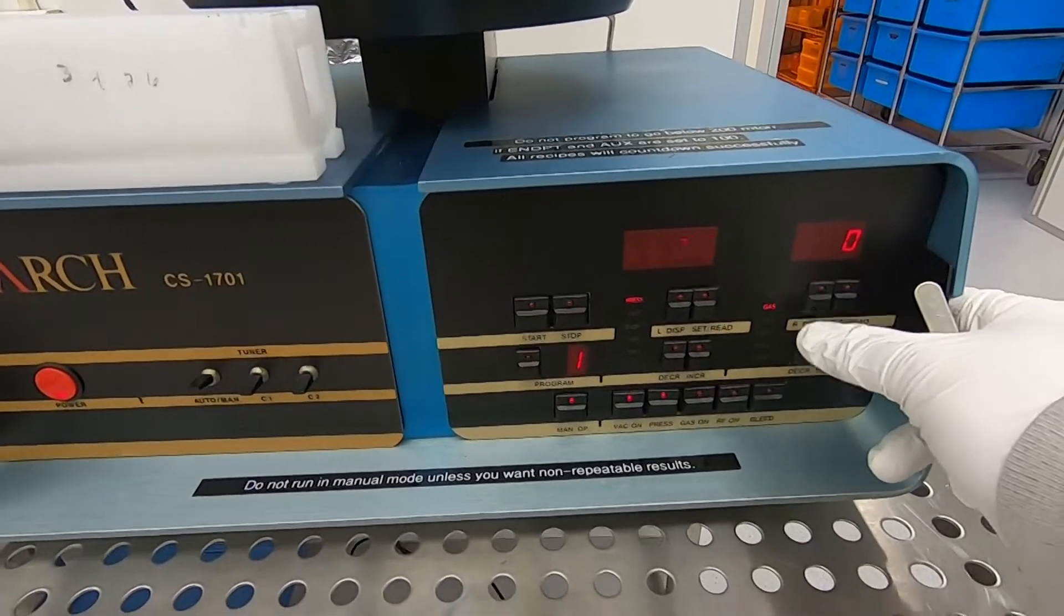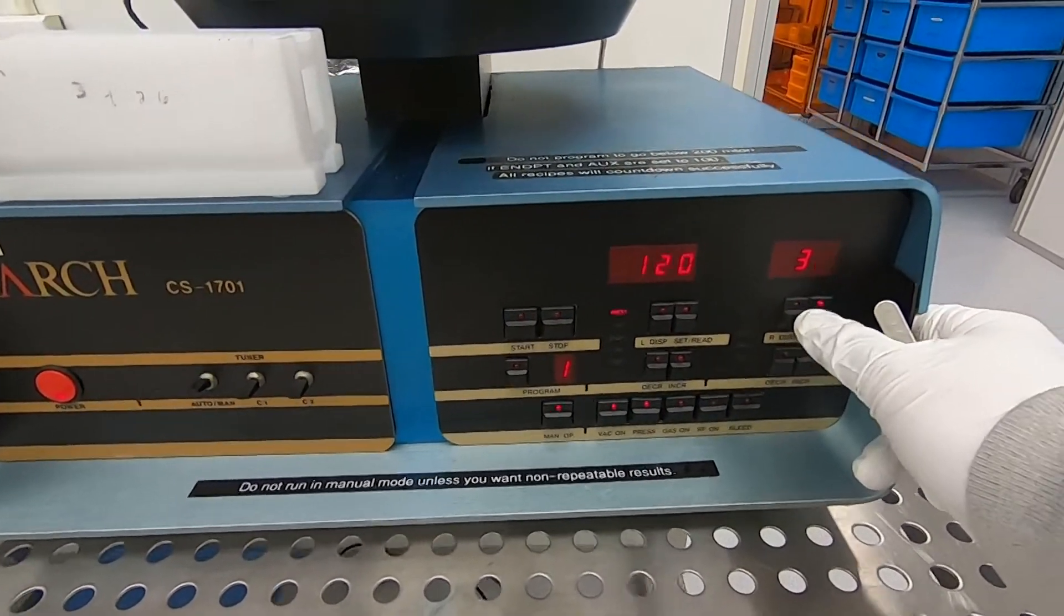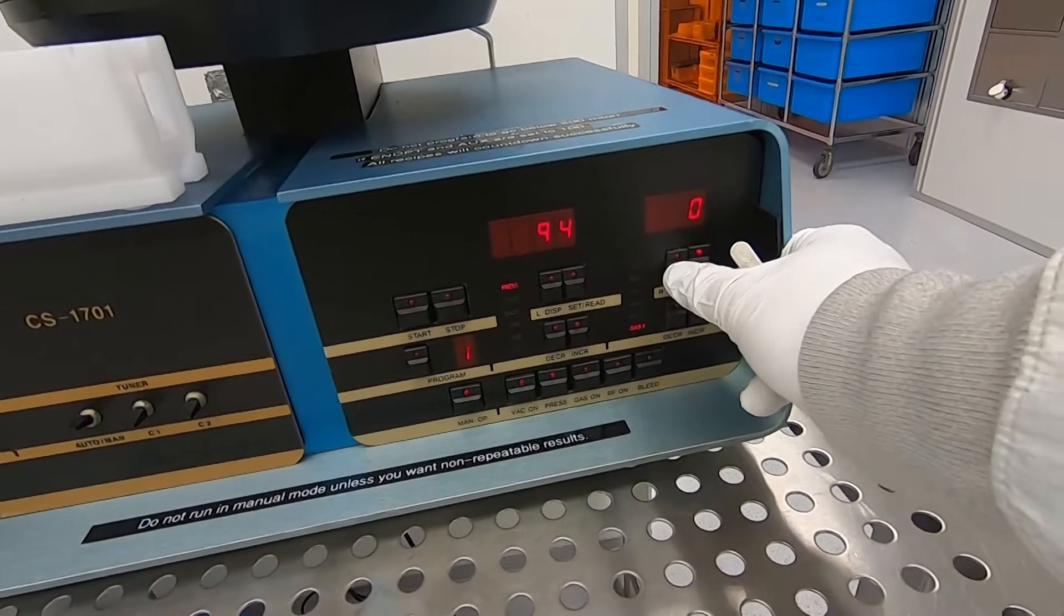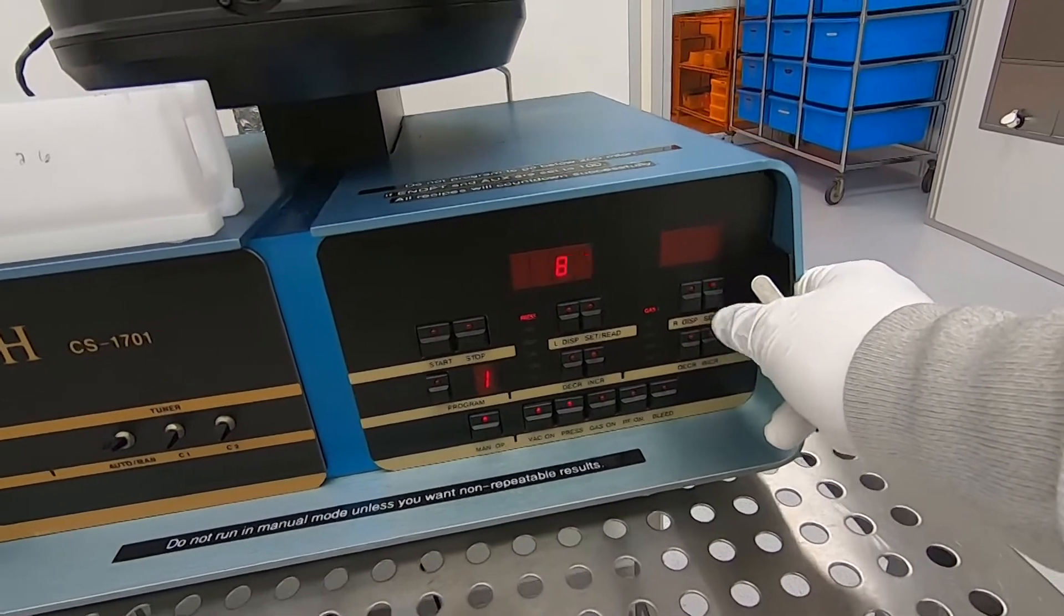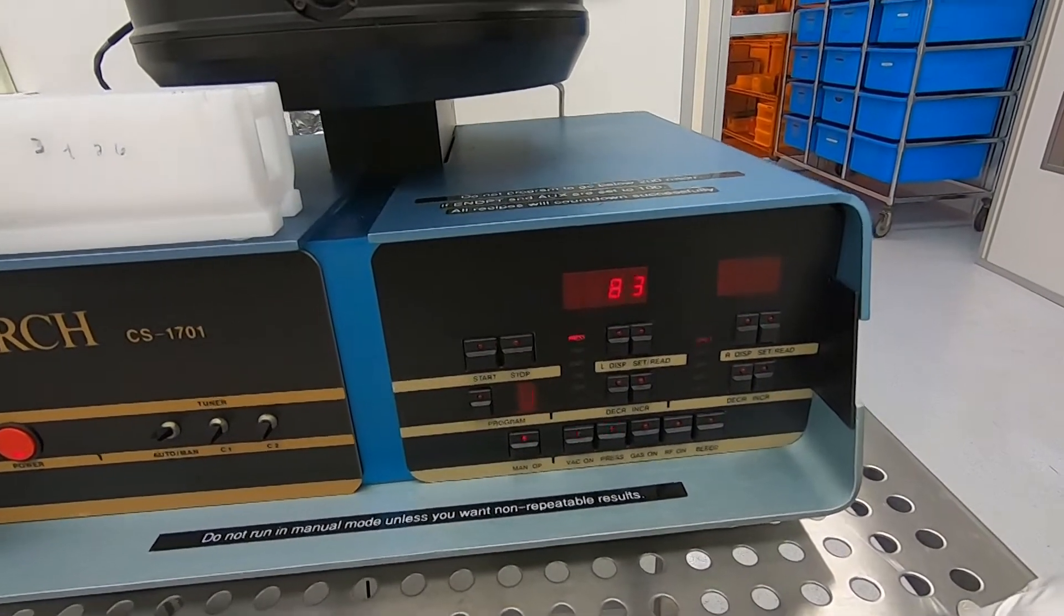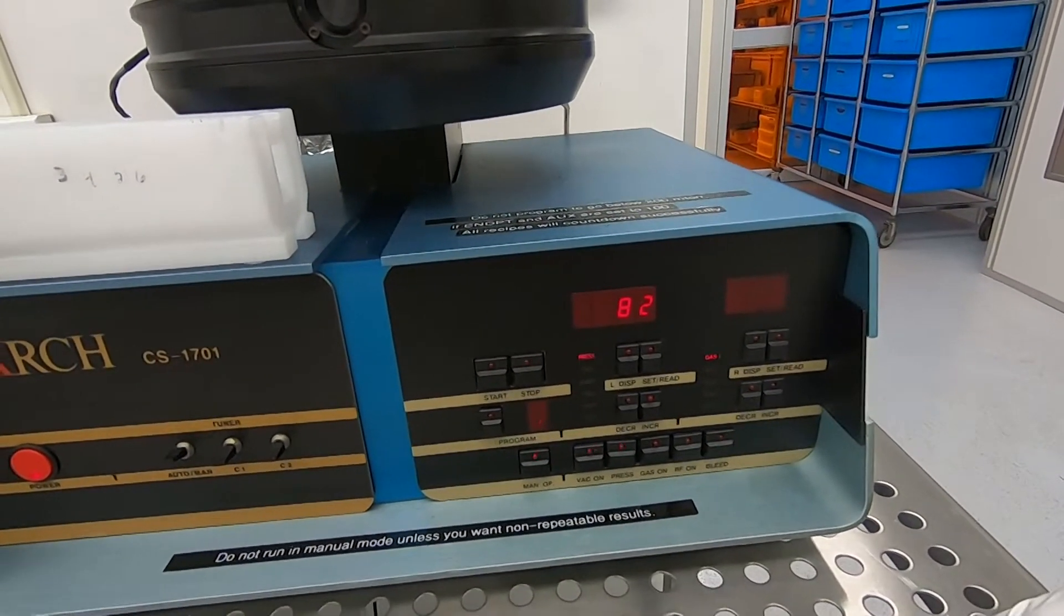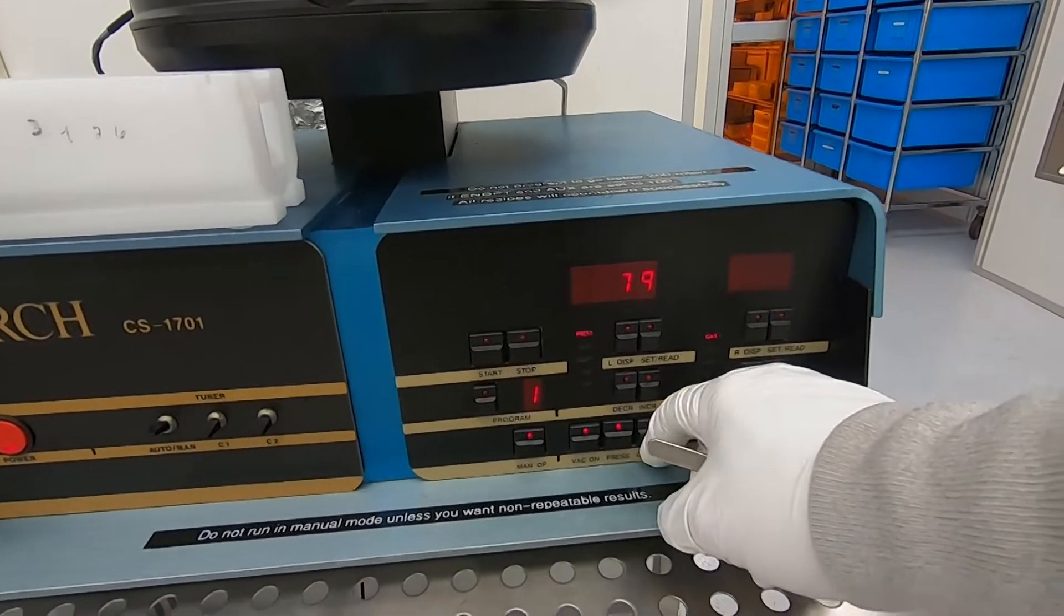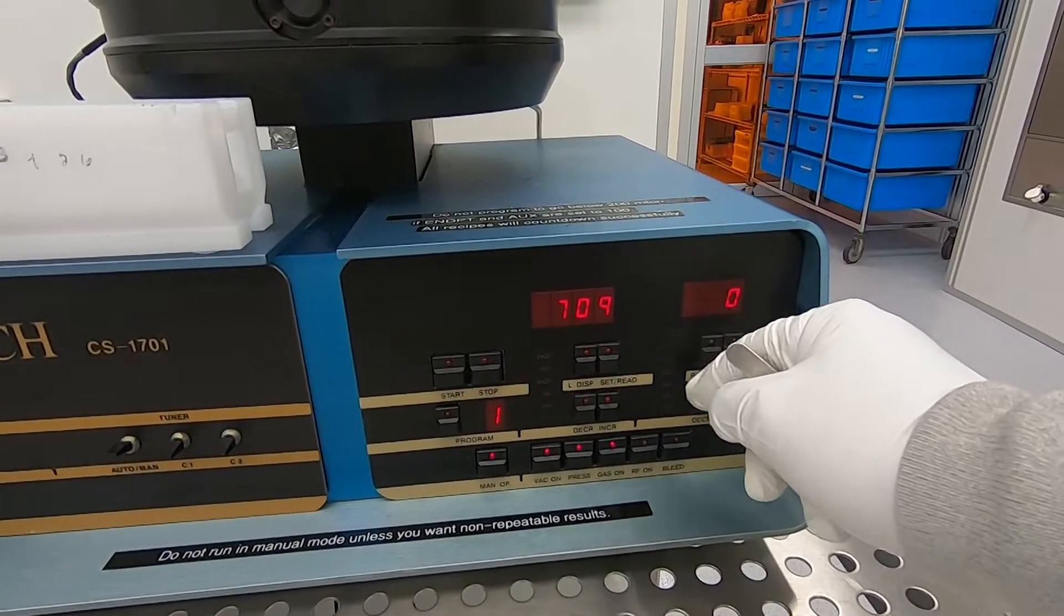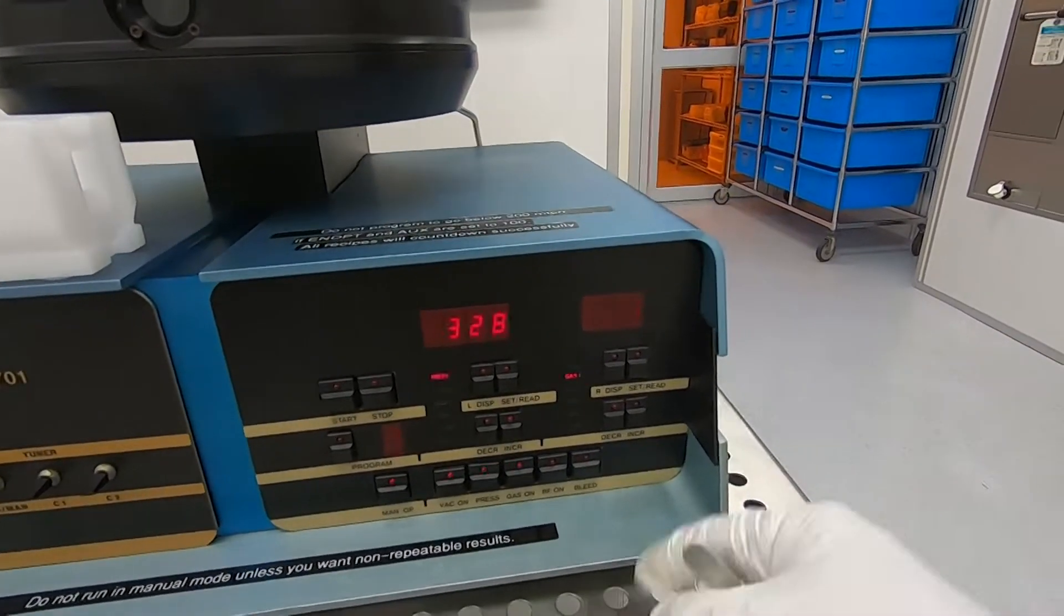While it's pumping down, I'm going to check the flow rates at 30% of full scale on gas two, which is oxygen. All right, so 80 millitorr, that's good enough. Turn the gas on. There's the actual flow rate of the gas.